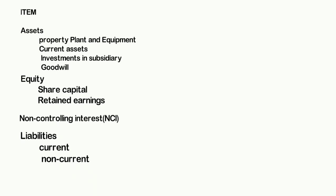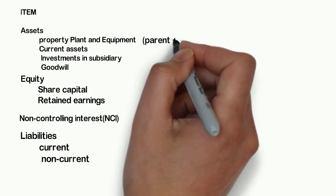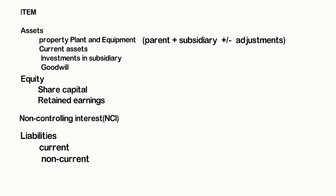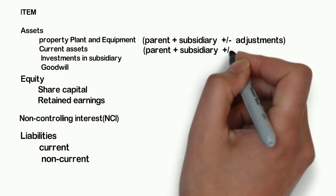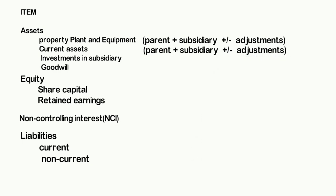Let us see what would appear on the face of the consolidated balance sheet. Most items of both parent and subsidiary are added to each other and then adjusted against any additional information given in the question. For example, property, plant and equipment appearing on both parent and subsidiary balance sheets are added on the face. Similarly, current assets of both are added together and any adjustments like intra-group transactions and unrealized profits are made here.